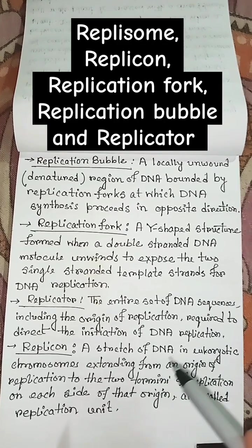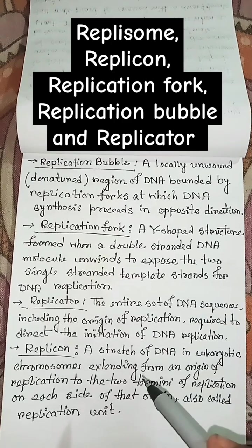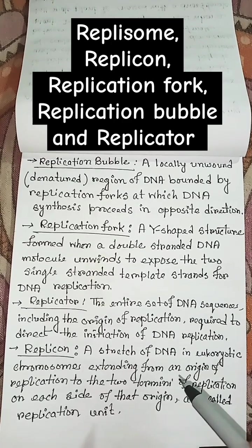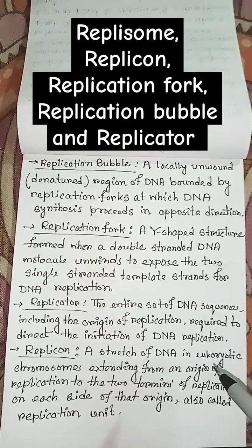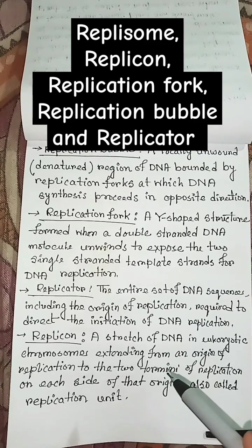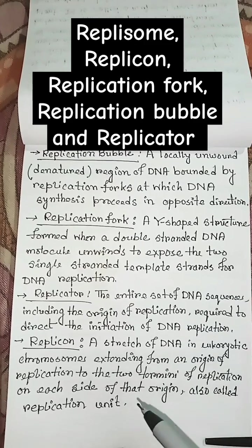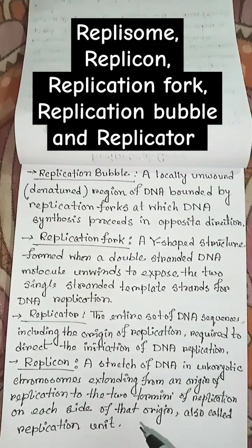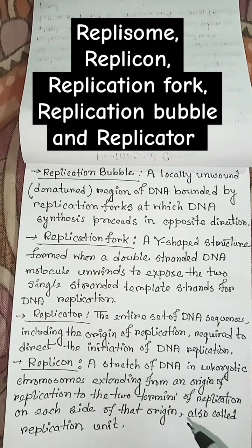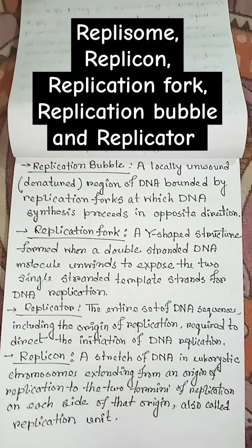What is a replicon? A stretch of DNA in eukaryotic chromosomes extending from an origin of replication to the two termini of replication on each side of that origin; also called a replication unit.